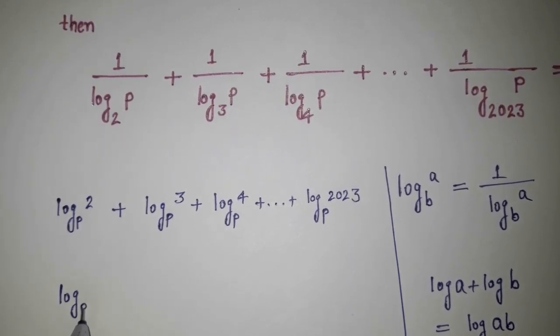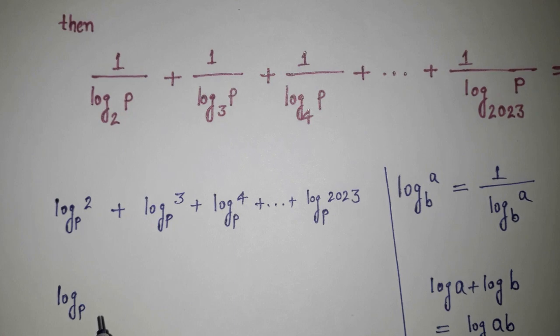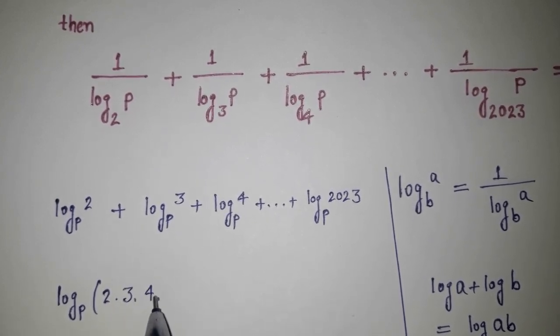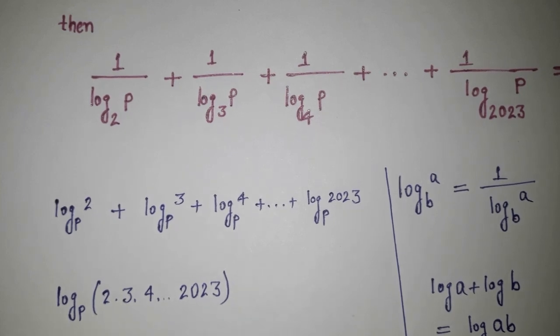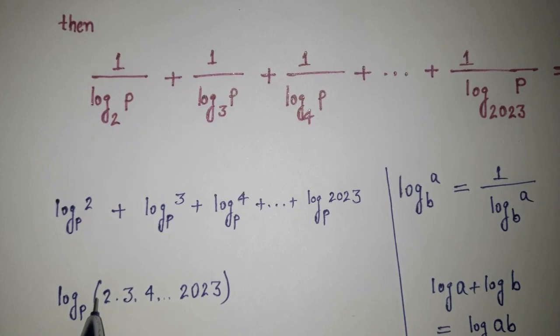Log base P of 2, like this way: 3, 4, dot dot dot up to 2023. And this is what, one is here. If I'm starting from one, nothing is going to change here. Nothing is going to make any kind of effect if I'm putting here one.